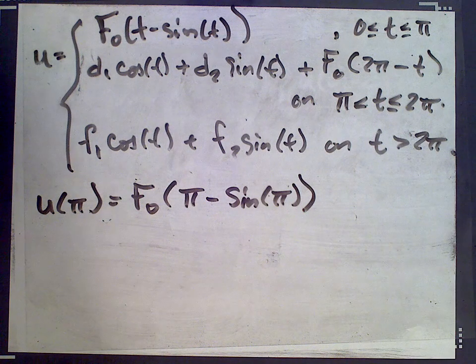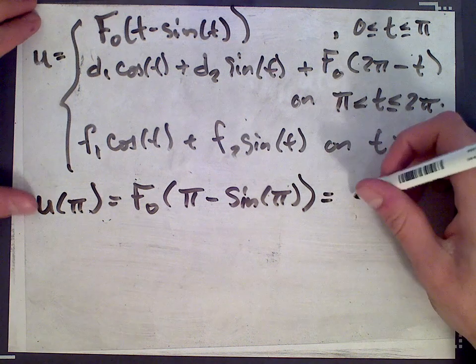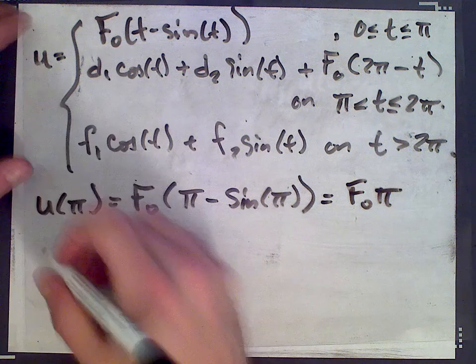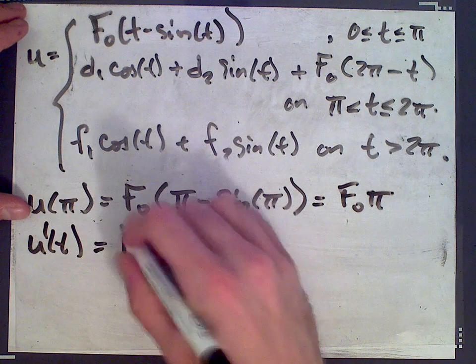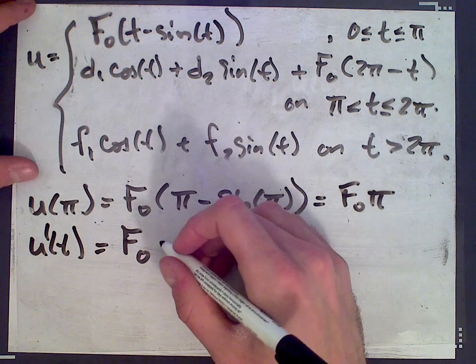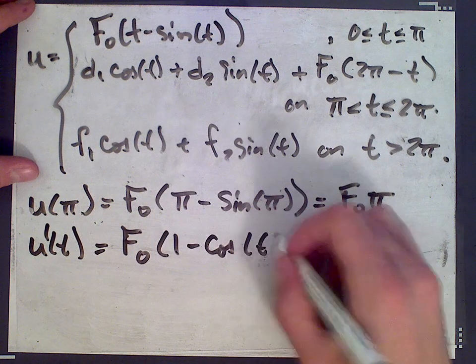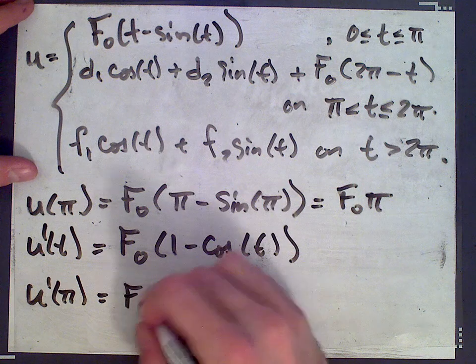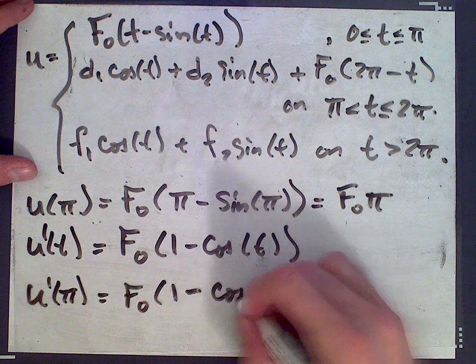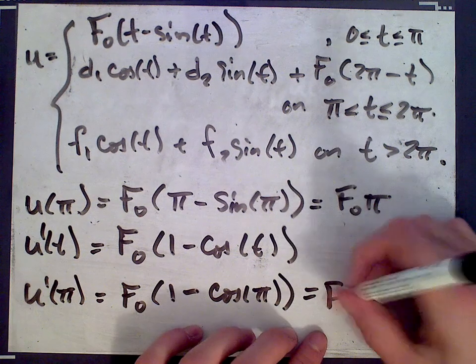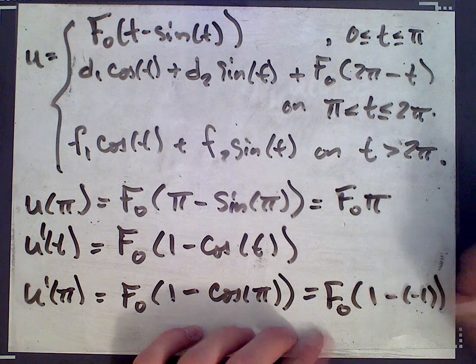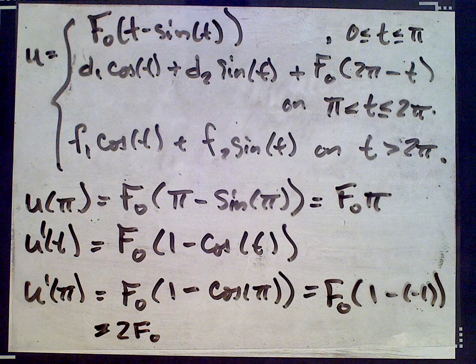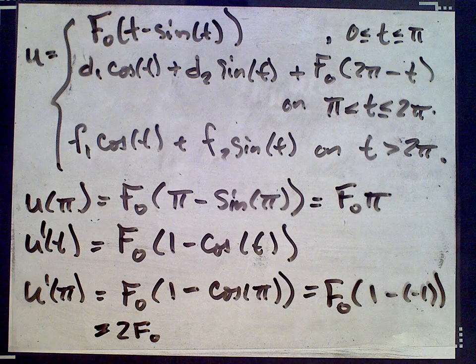So we get u(π) is f0 π minus sin(π). So what does that give us? Sin(π) is 0, so this is f0 times π. And then u'(t) is f0 times (1 minus cos(t)). And so u'(π) is f0 times (1 minus cos(π)), which is f0 times (1 minus negative 1), which is 2f0. Okay, so we get the values when we plug π in.